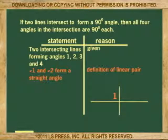Second: angles 1 and 2 form a straight angle. Reason: definition of two angles on a line, or a linear pair.